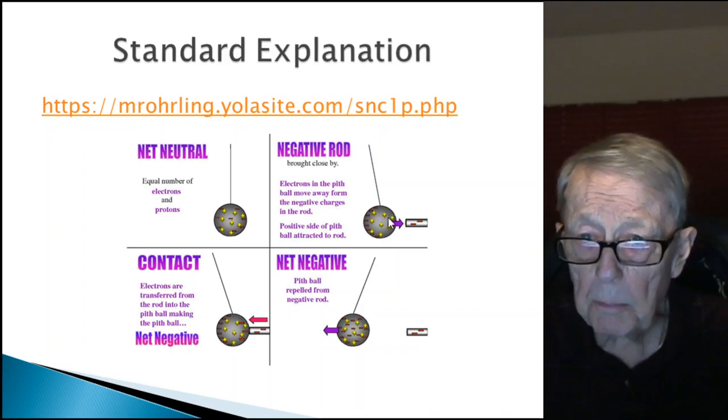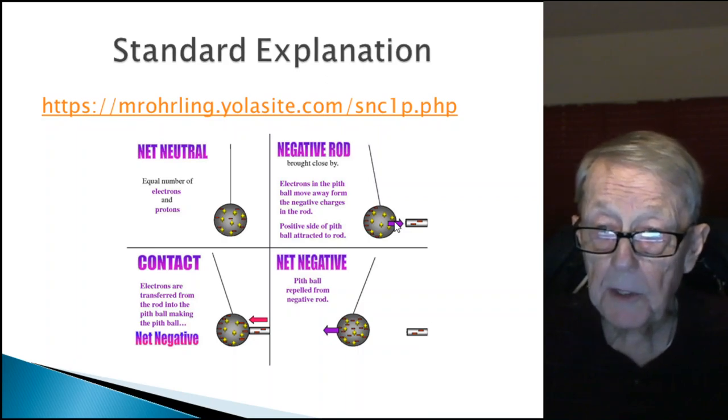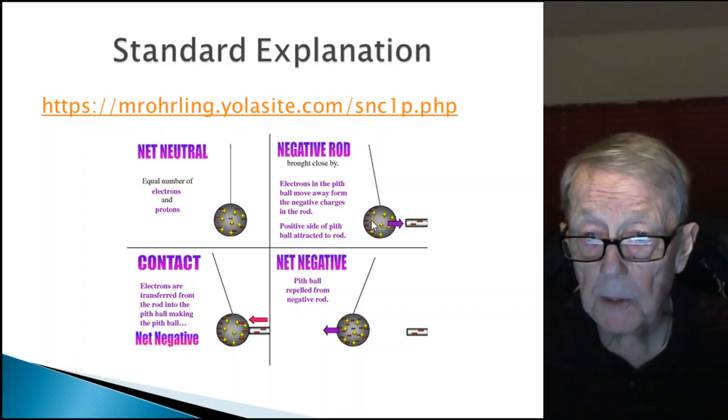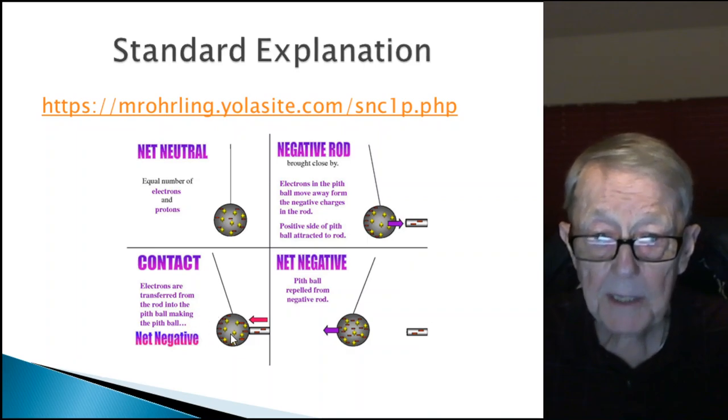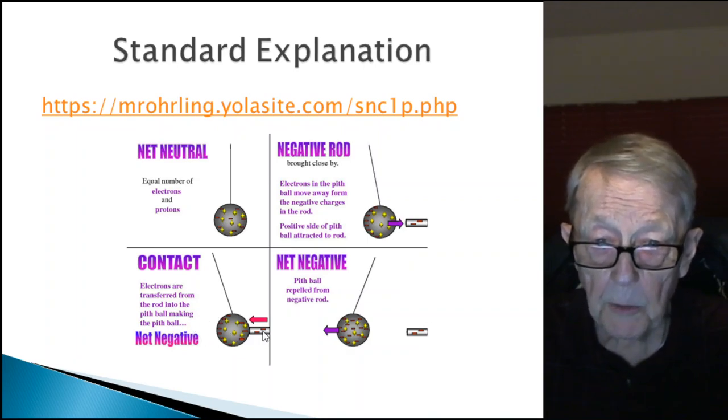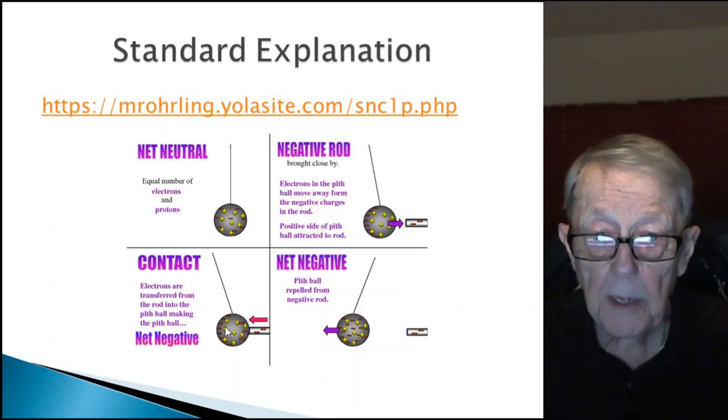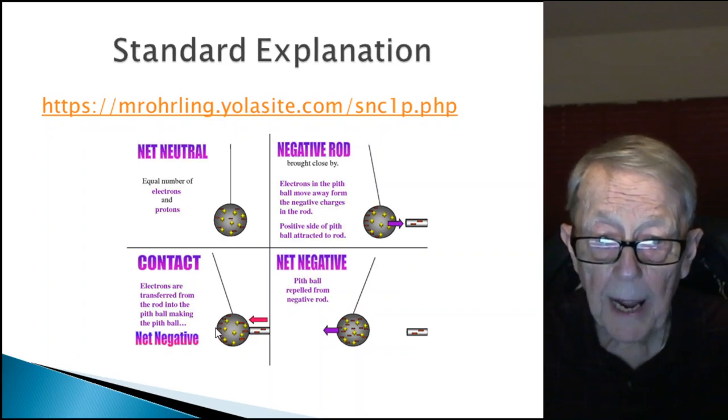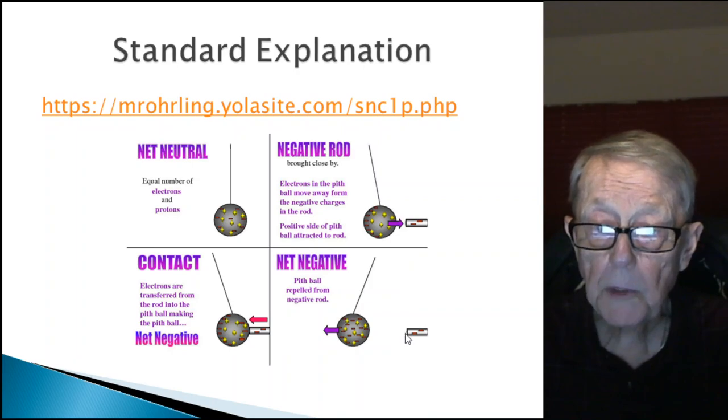Since this looks more positive here and this is negative, they claim positive and minus attract, and so the pith ball is going to come and hit the rod. When it hits it, there's a transfer. This shows the electrons transferring to the pith ball, adding more negative electrons, making the pith ball negative. Since the rod is negative, you now have repulsion.